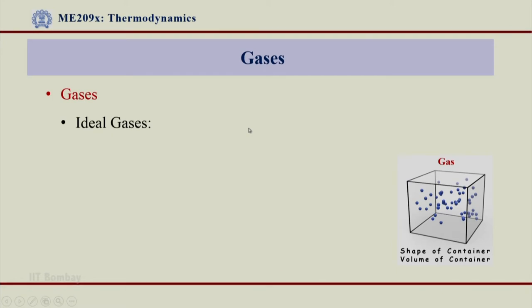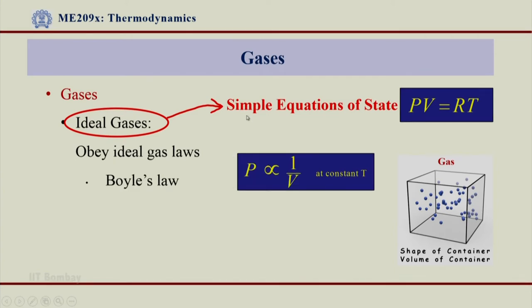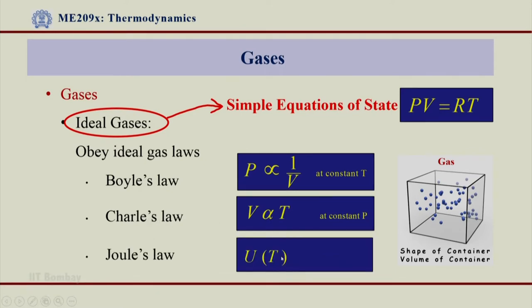Gases, as we all know, include ideal gases which basically obey the ideal gas law. The ideal gas law is a simple equation of state: PV = RT. When we say they obey a simple equation of state, they also obey the basic gas laws — Boyle's law (PV = constant at constant temperature), Charles's law, and Joule's law (thermal energy is a function of temperature only). Based on this simple equation of state, for any given pressure and temperature condition I can know all the properties of these gases.